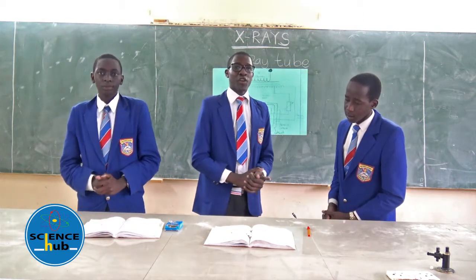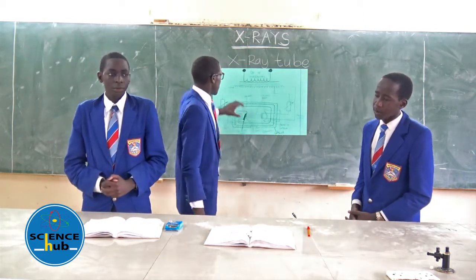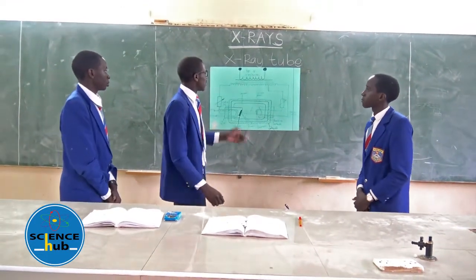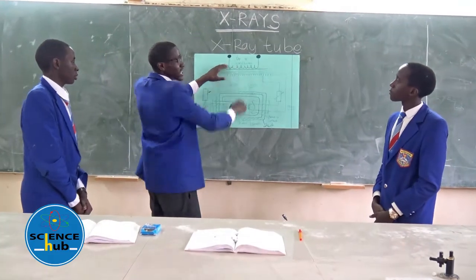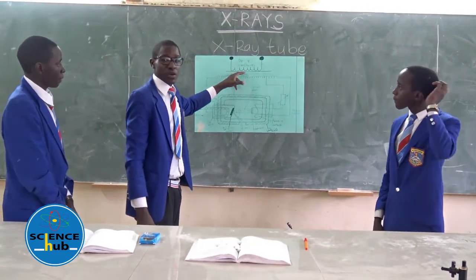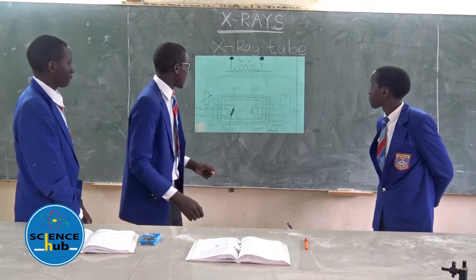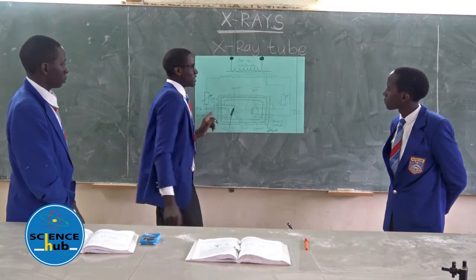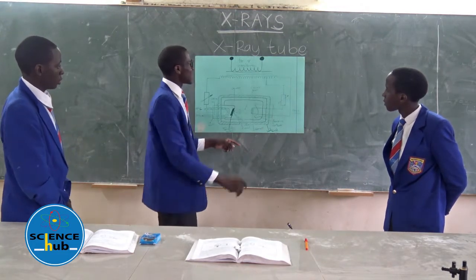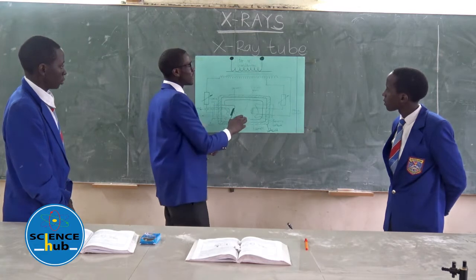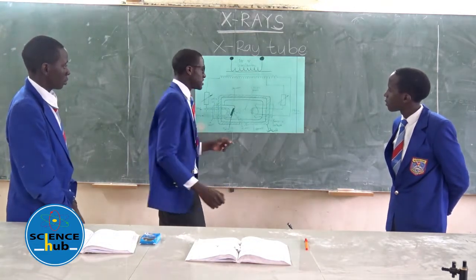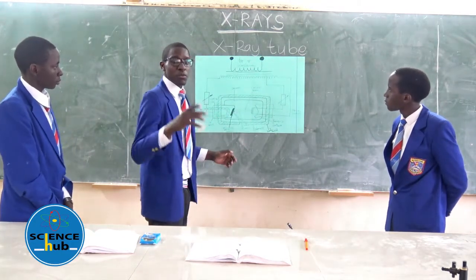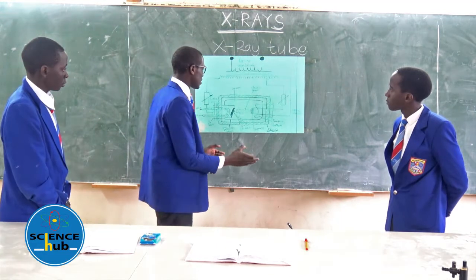On the board, I have a drawing of the X-ray tube. At the top here, I have a transformer. The purpose of the transformer is to provide the high voltage required for the electric current to run through the heat circuit to the filament. The function of the heat circuit is to conduct electric current from the high voltage of the step-up transformer to the filament. The function of the filament is to focus electrons to the target.